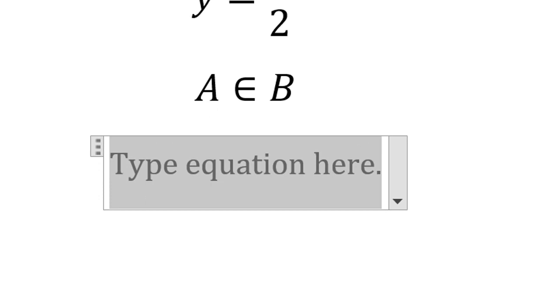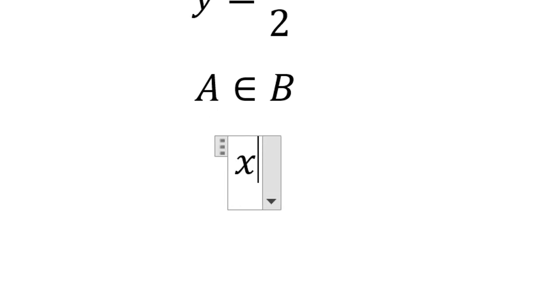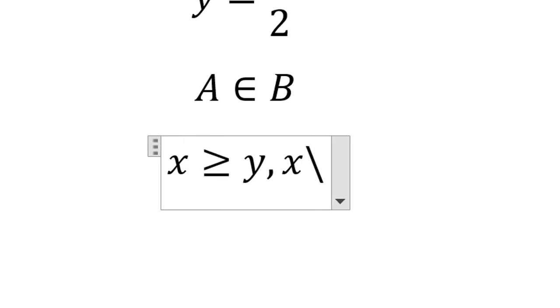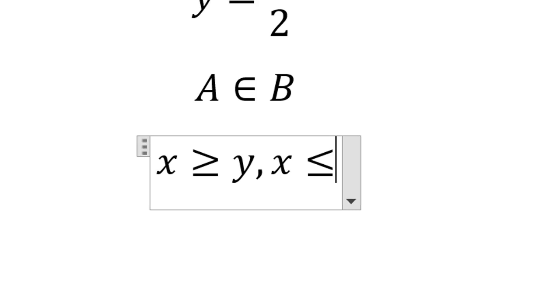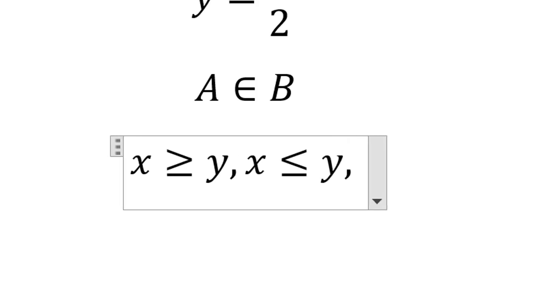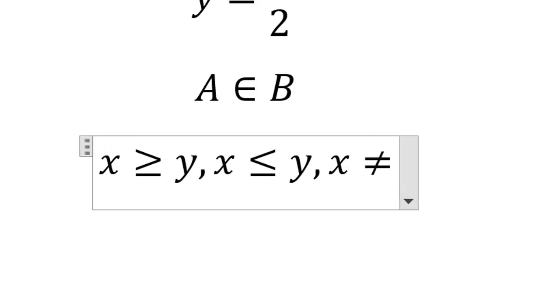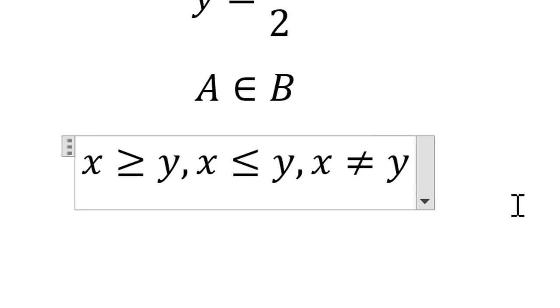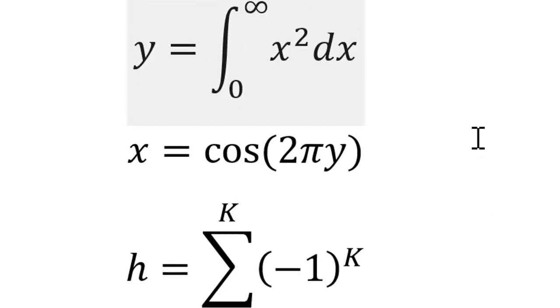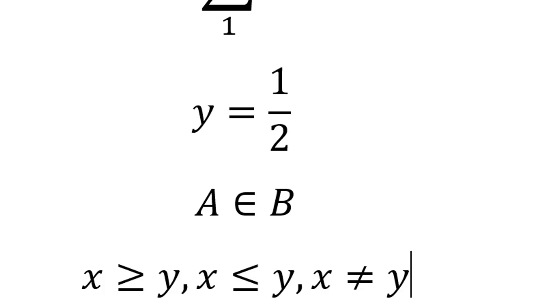Let's say I want to write x greater than or equal to y. So it is x or greater than or equal to, I will write g eq, and this is y. Similarly, x for less than or equal to, that is l eq, and it is y. If I want to write not equal to, then it will be x neq and y.